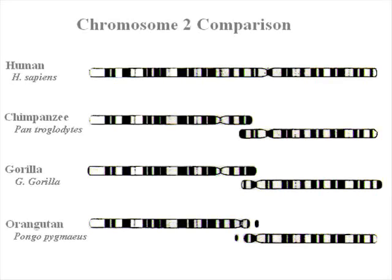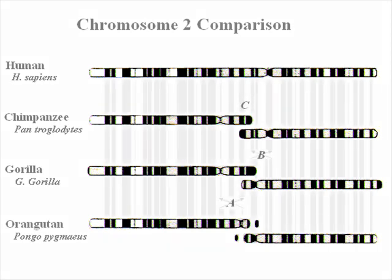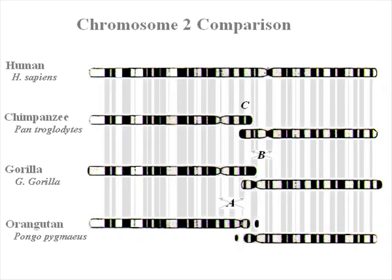This image shows chromosomes 2, 2a, and 2b for all the great apes. As you can see, the banding pattern is highly conserved in all four major species: the orangutan, the gorilla, the chimpanzee, and the man.